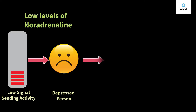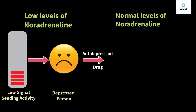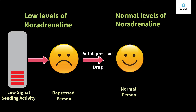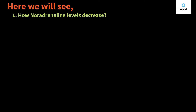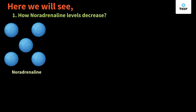In such situations, if we administer an antidepressant drug, the person becomes normal or happy again because the signal-sending activity has increased. Let's figure out what the drug does to increase the noradrenaline level. We will see two important things: first, how noradrenaline levels decrease, and second, how drugs can counteract it.